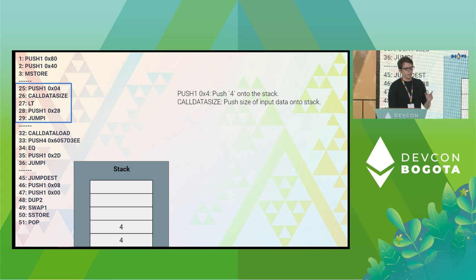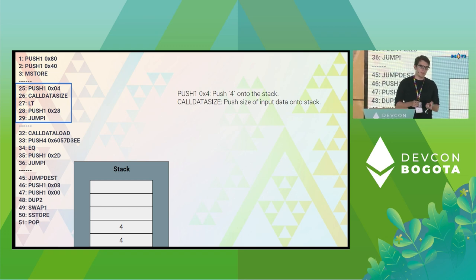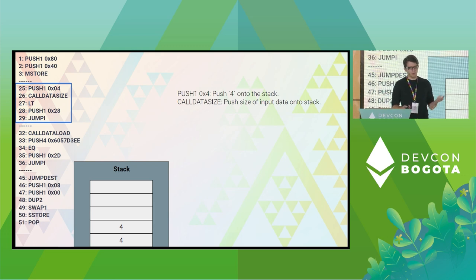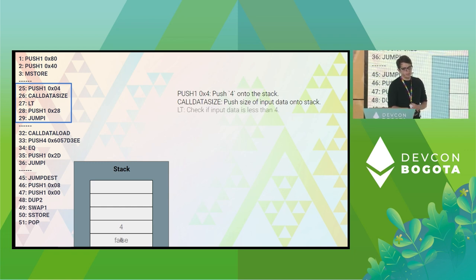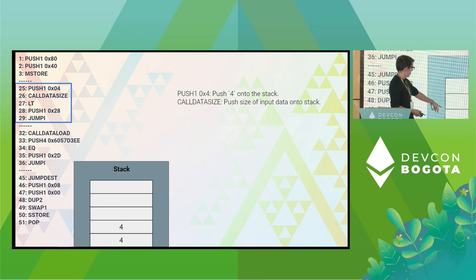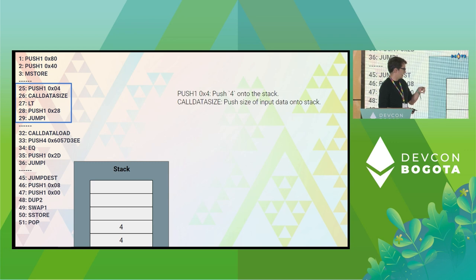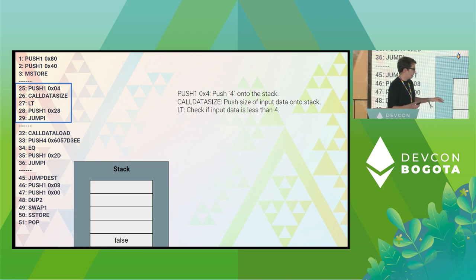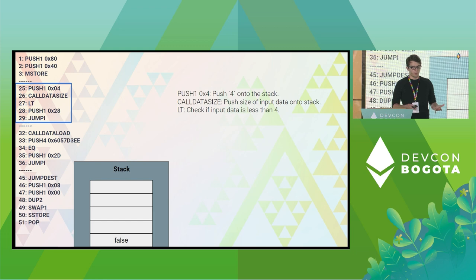The answer is that when we call setTotalSupply in ethers, under the hood ethers hashes that function name into its 4-byte function signature and sends that along with the input data. So we know our call data size is 4. Next, LT checks if the input data size is less than 4. It looks at the top value of the stack and the second-from-top value. In our case, 4 is not less than 4, so we push false onto the stack.